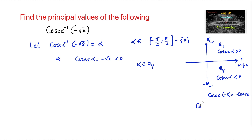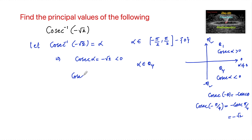Therefore, cosecant of minus pi by 4 equals root 2, so we can write minus cosecant of pi by 4 equals negative root 2. Therefore we can write cosecant alpha is equal to cosecant of negative pi by 4.